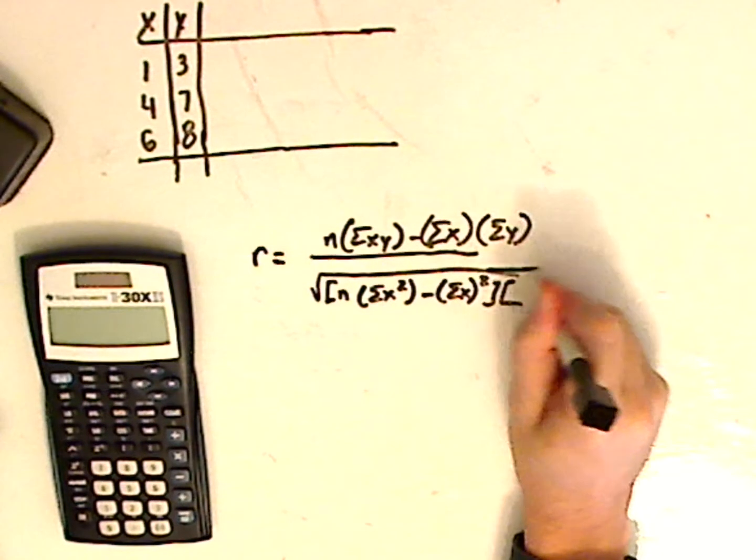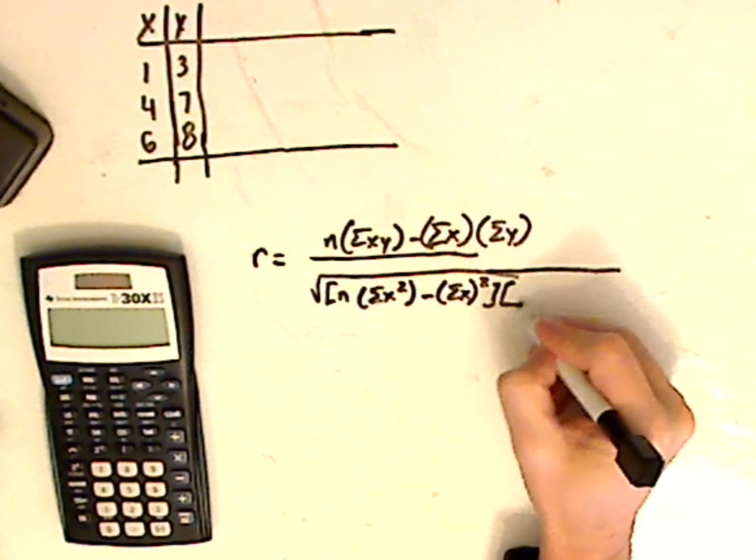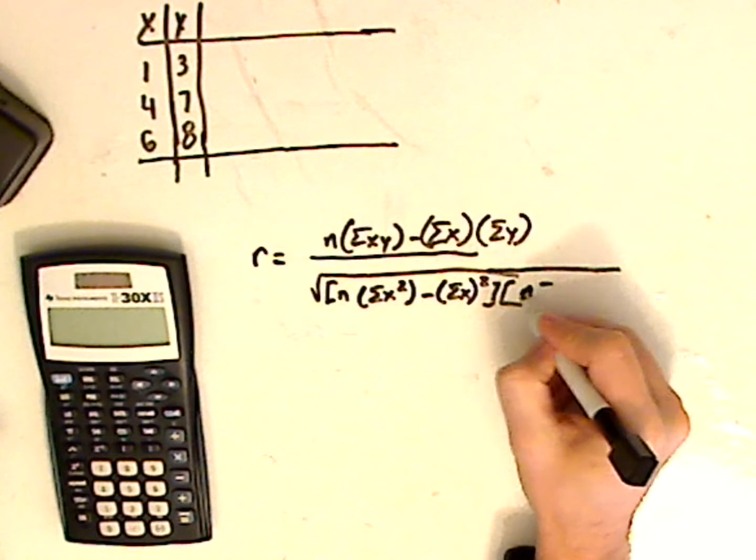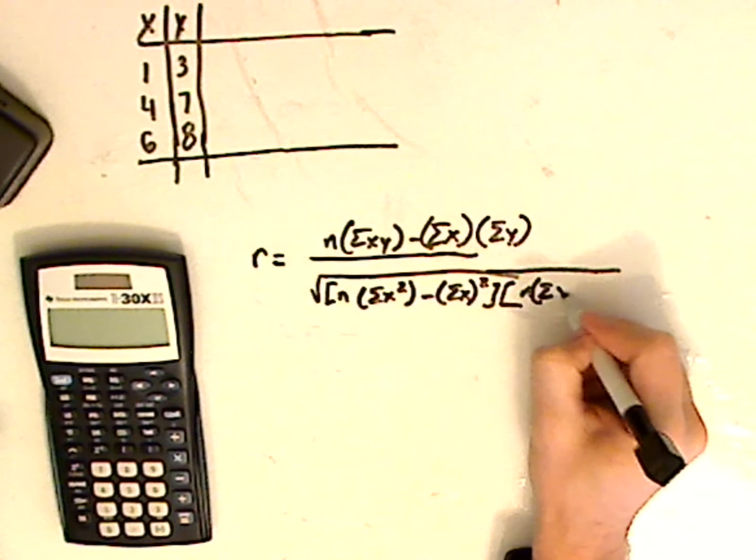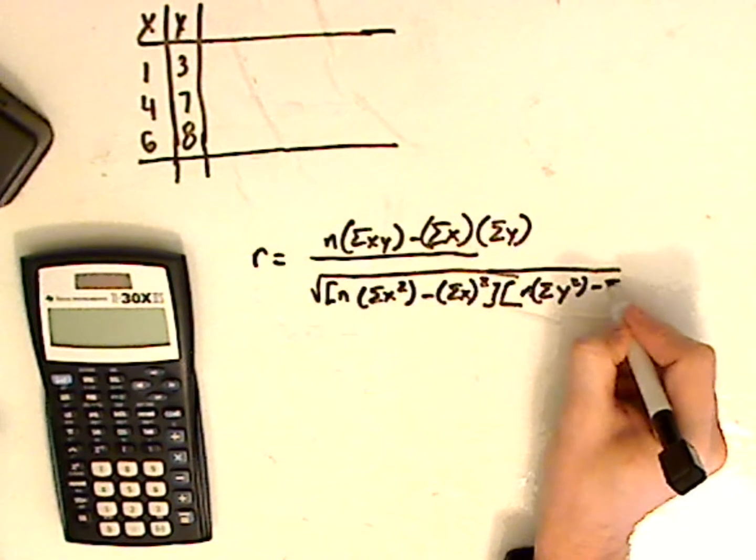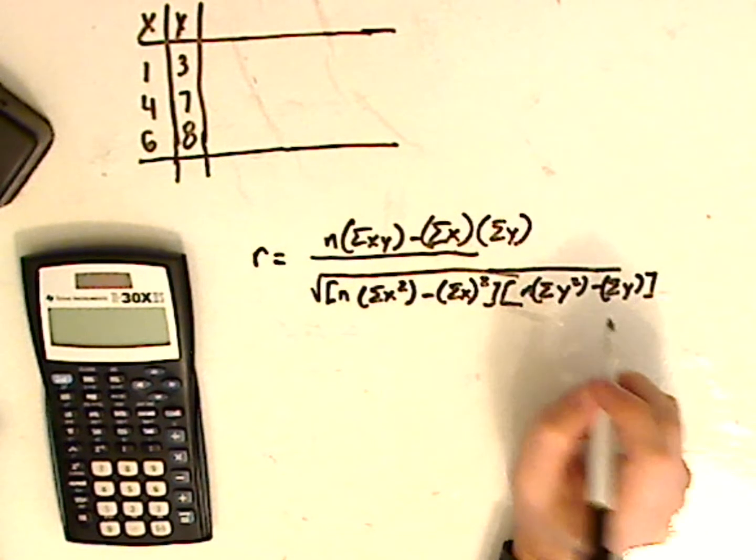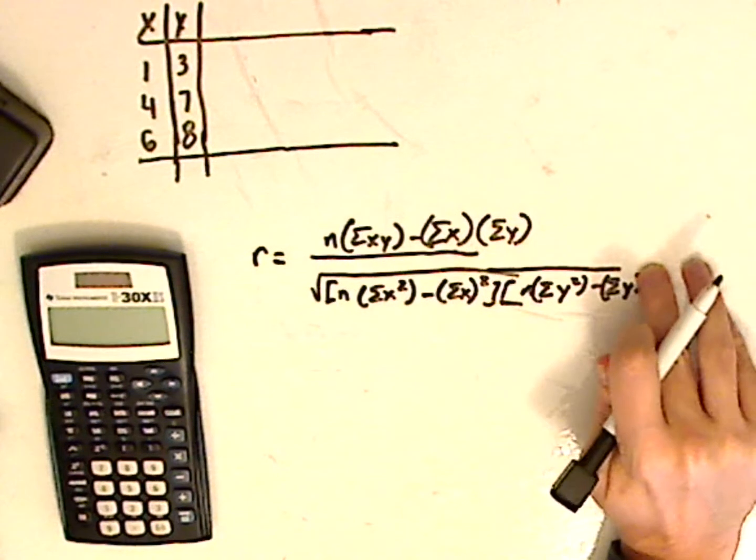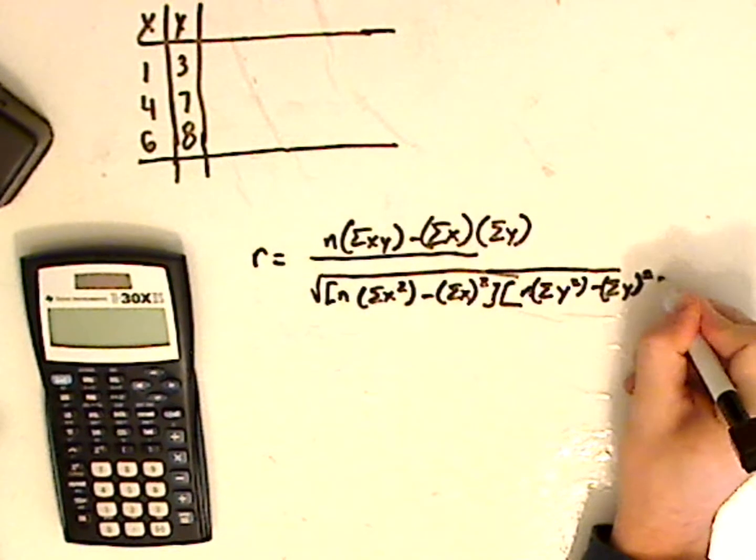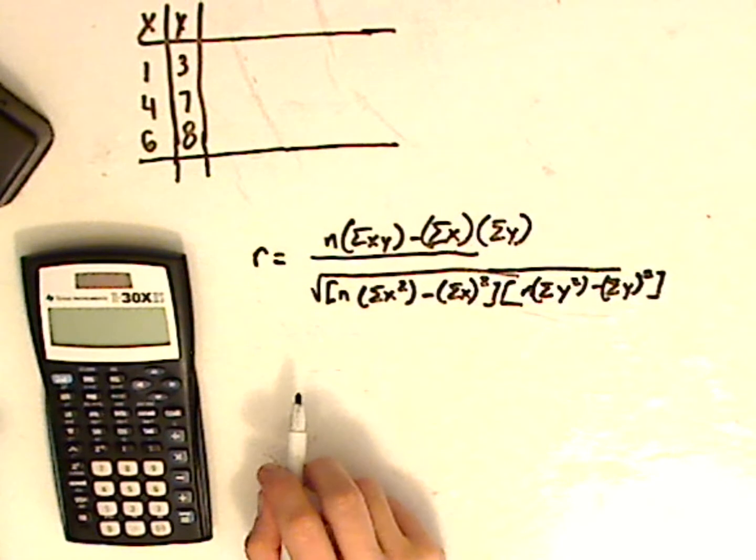Looks like I need a little bit more room. Summation of n, sorry n not summation of n times the summation of y squared minus the summation of y close parentheses bracket. I forgot to square it, squared. Alright so that's what you have for the formula.